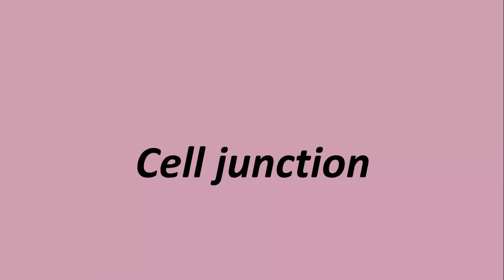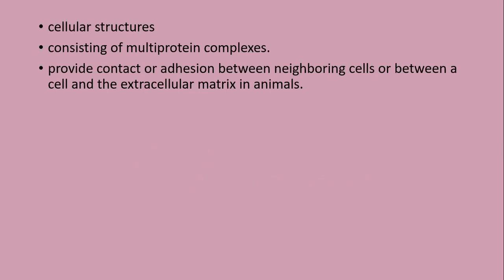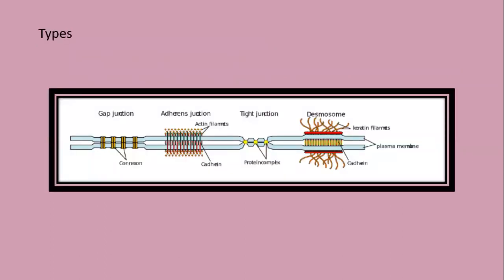Welcome viewers, welcome to another video of Bio Guide. In this video today we will discuss about different cell junctions. Cell junctions are cellular structures made up of multi-protein complexes. They provide contact or adhesion between neighboring cells or between one cell and the extracellular matrix. Generally these are found in animals, and also in some plants.